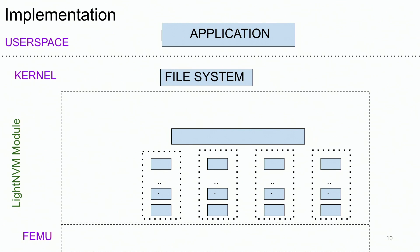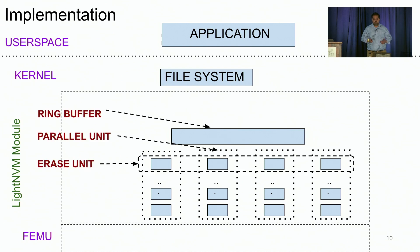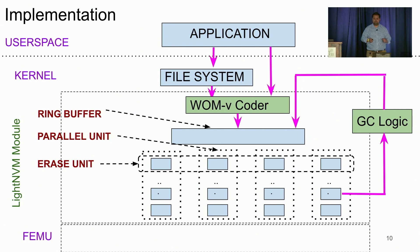In order to answer these questions, we implement WOM V code in Linux LightNVM module backed by FEMU. The Linux LightNVM module consists of three main data structures, a ring buffer that stages all the writes coming in from the application and file system, parallel unit across which data is sharded, and erase unit, which is a logical unit of write and erase in an SSD. We place our WOM V coder to intercept all the writes that are coming from the application and file system, and encode the incoming data before it's written to the ring buffer. We change the garbage collection logic to only perform selective erase operations, and finally, we add a QLC extension to FEMU.